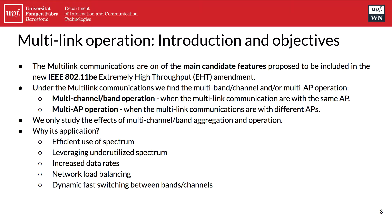Let's begin with the introduction of multi-link operation. As you may know, 802.11be is referred to as the Extremely High Throughput amendment, and it is the next amendment trying to define the next generation of Wi-Fi — Wi-Fi 7 — by seeking to further increase throughput performance while reducing end-to-end latency and increasing the reliability of communications. Different features have been proposed, but in concrete, multi-link communications are the most innovative ones.